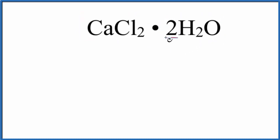So this dot here, that means we have two separate water molecules around each calcium chloride. So for the calcium chloride on the periodic table,